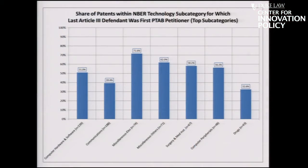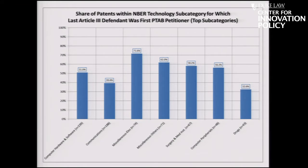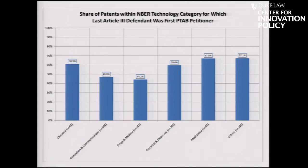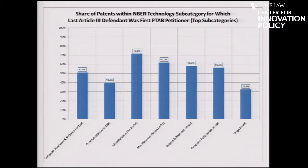The share of patents within technology subcategories for which the last Article III defendant was the first PTAB petitioner — these are the top-level six categories. The National Bureau of Economic Research has these subcategories and you can drill down to pretty sophisticated detail. So computer hardware and software, communications, miscellaneous electrical and chemical, surgery and medical instruments, and so on — just more detail at that level.